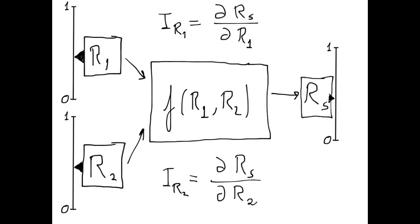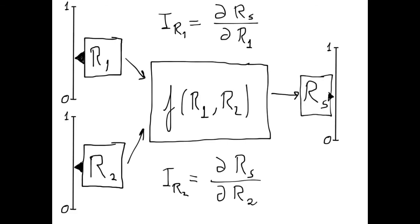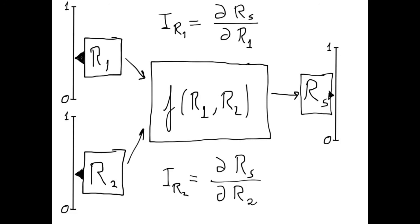Reliability importance therefore allows us to rank the components by how important they are for the reliability of the whole system. For instance, if we change the reliability of component 1 just slightly but the reliability of the whole system varies a lot, then component 1 is obviously very important. On the other hand, if we change the reliability of component 2 just a little bit and this only has a tiny effect on the system reliability, then component 2 is not very important. Using reliability importance as a metric, we can rank the components by how important they are for the final reliability of the whole system.